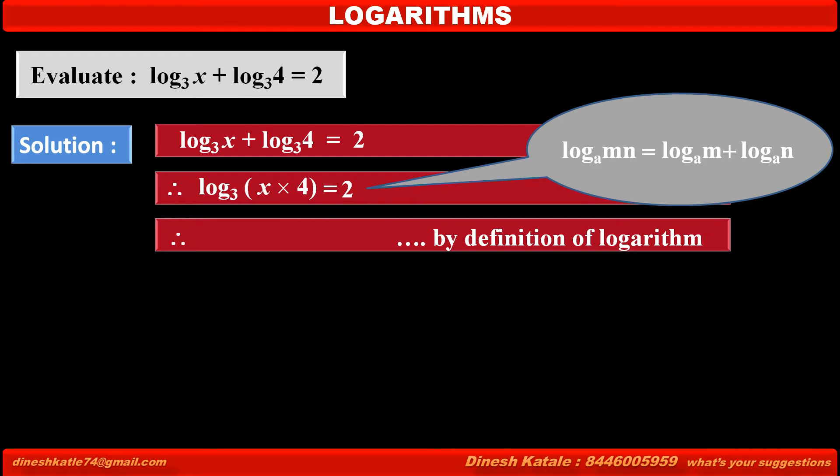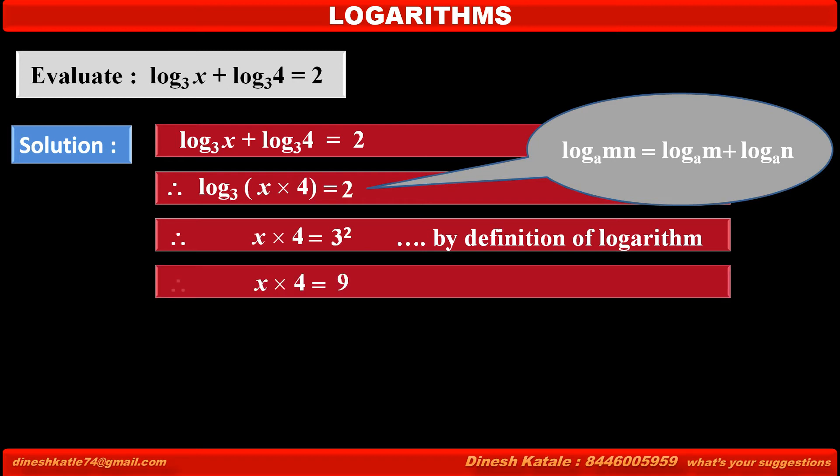Therefore, by converting logarithmic form into exponential form, we get x into 4 is equal to 3 square by definition of logarithm.